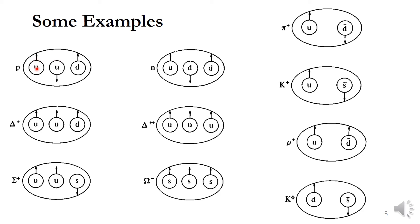Even though all quarks have spin 1/2, they can be spin up or spin down. The first U is spin up, the second U is spin down, and D is spin up. So the total spin is 1/2 + (-1/2) + 1/2 = 1/2. The strangeness is 0, since there is no strange particle, so the net strangeness is again 0.